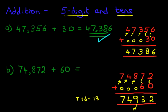We have reached our answer. It is 74,932. Again, we can give ourselves a nice big tick. And that is addition of 5-digit numbers and tens.